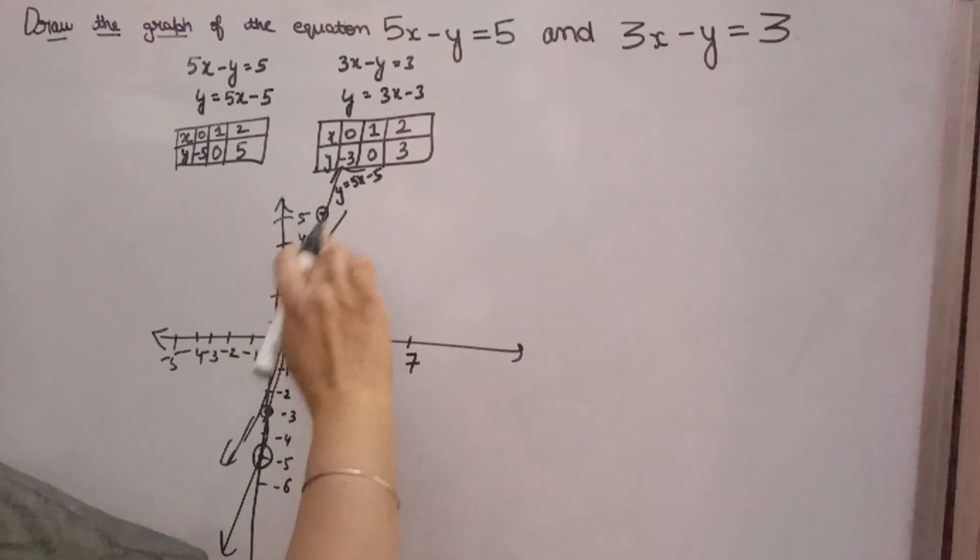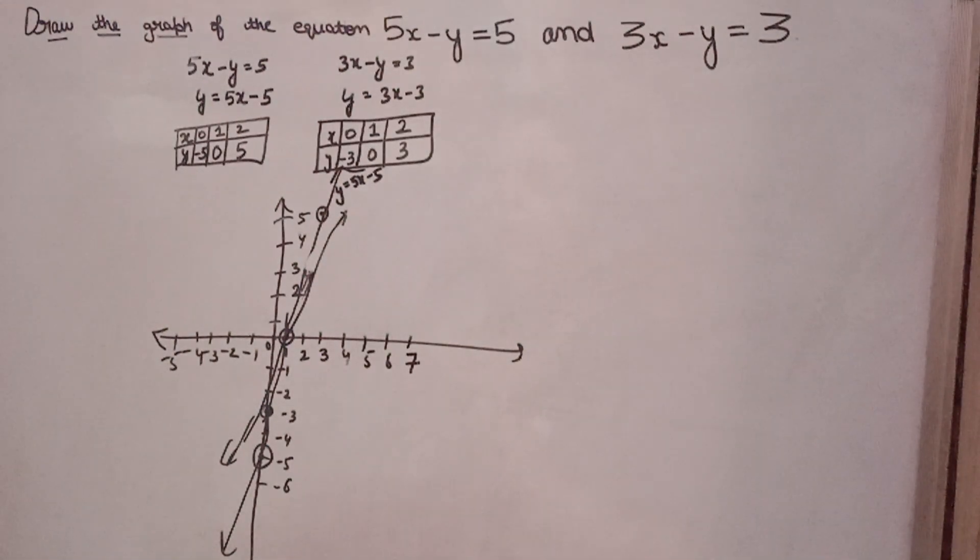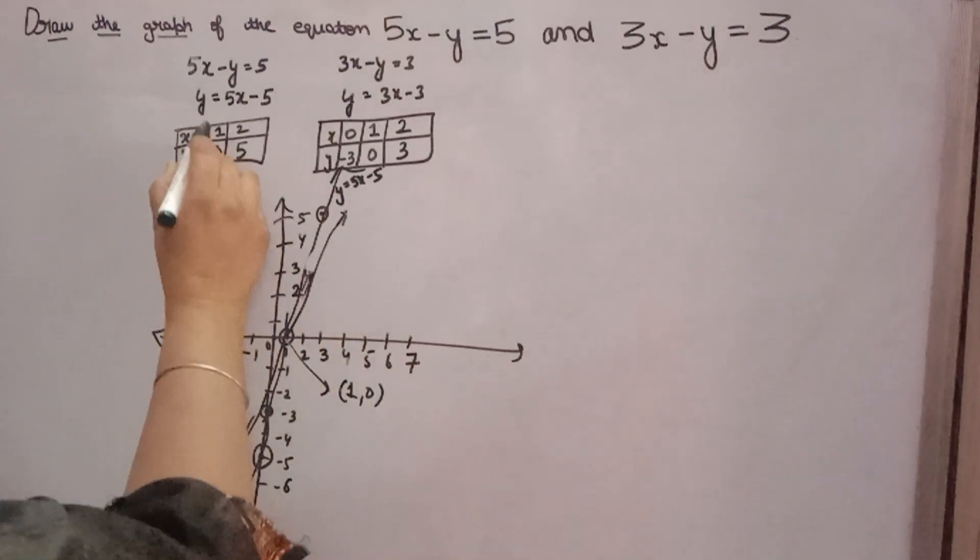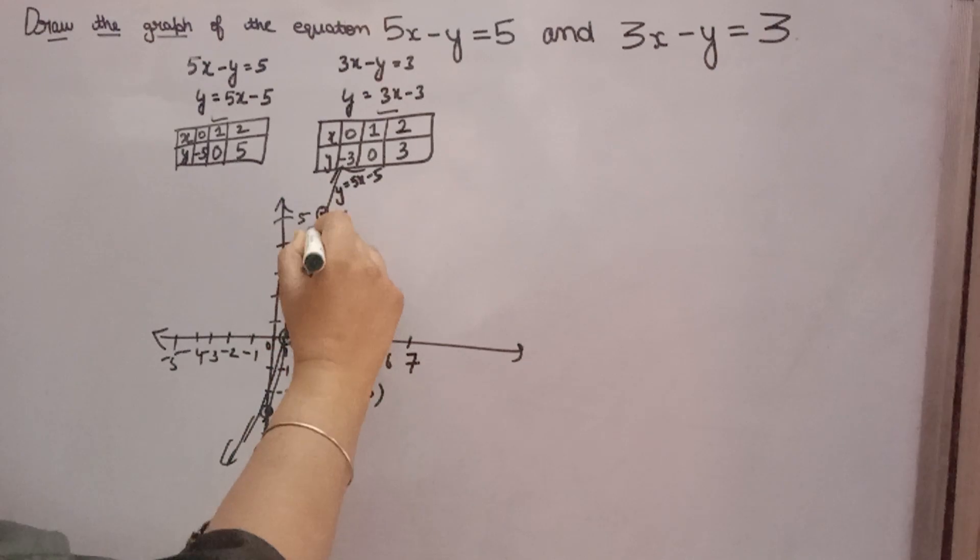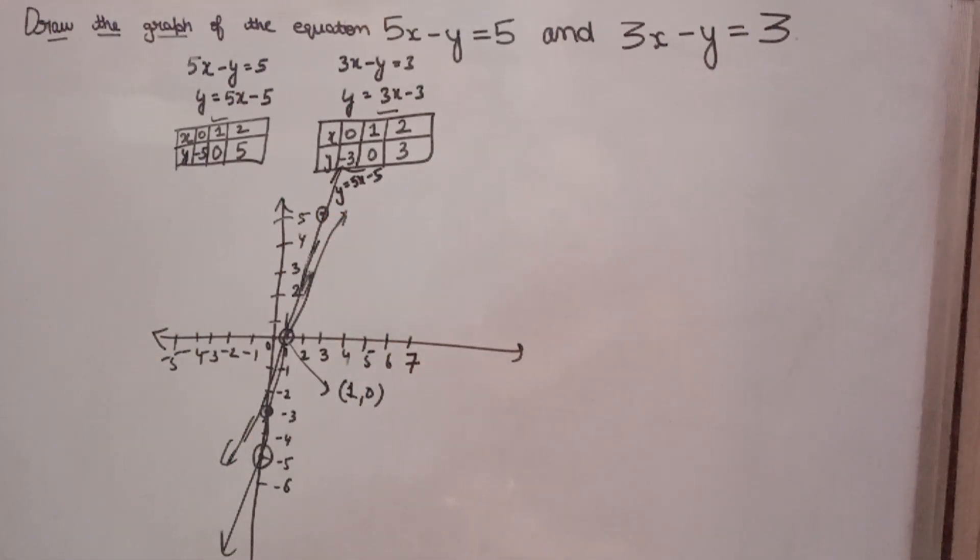So this is the graph. The meeting point, its meeting point is x is 1, y is 0, because its point is coming in both. By intersection also you can take it out. So with the help of a scale, you have to draw on the graph paper. Thank you.